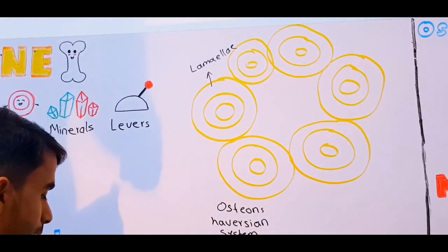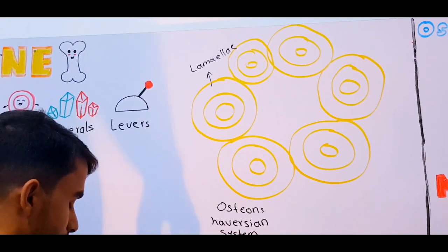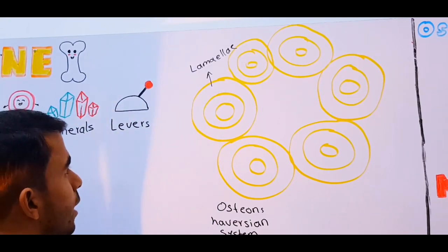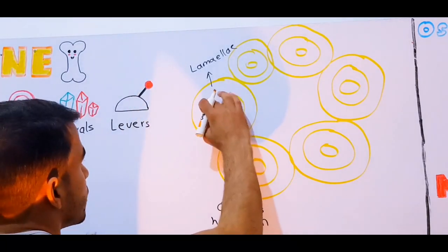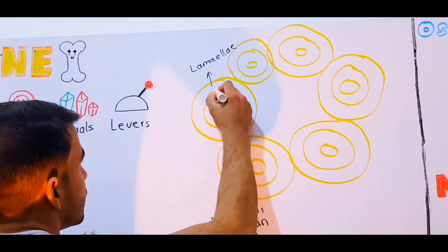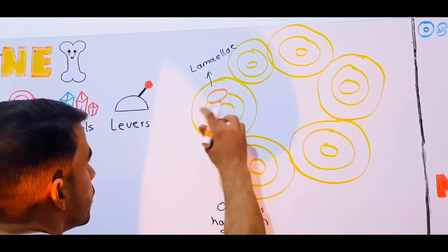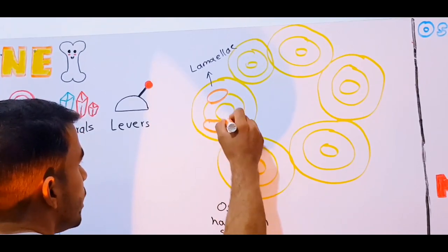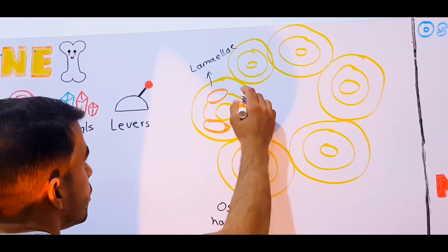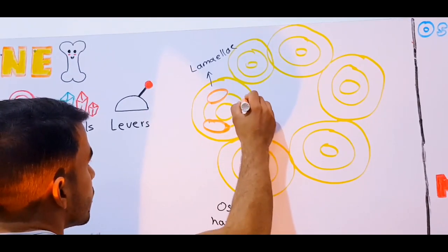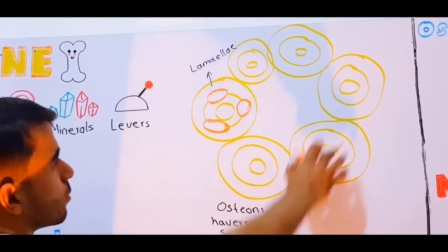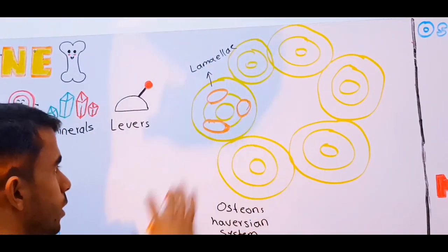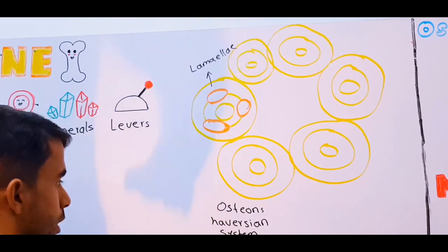In between these lamella layers, we have special cavities called lacunae. So we have lacunae in between these layers.